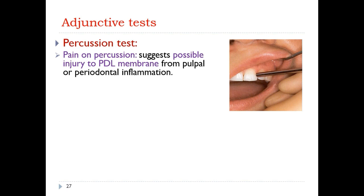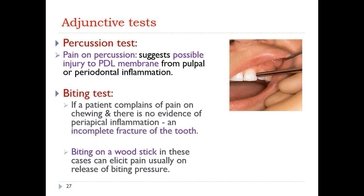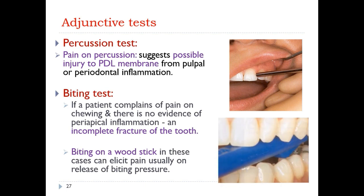Adjunctive tests for endodontic diagnosis include the percussion test: pain on percussion suggests possible injury to the periodontal membrane from pulpal or periodontal inflammation. The biting test is done when a patient complains of pain on chewing with no evidence of periapical inflammation, where an incomplete tooth fracture may be the cause. Biting on a tooth sleuth and releasing pressure elicits pain, diagnosing a vertical tooth fracture.